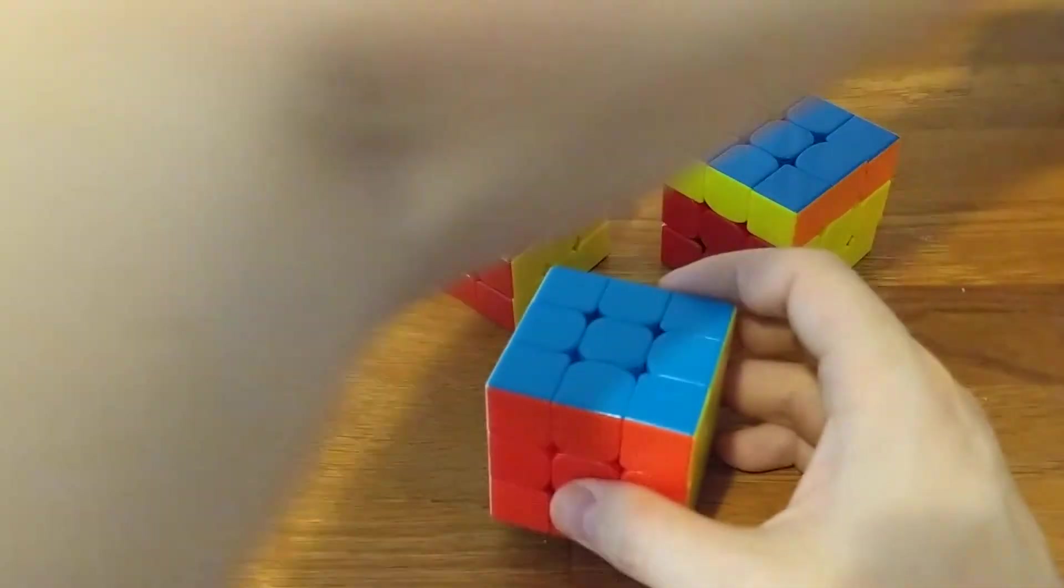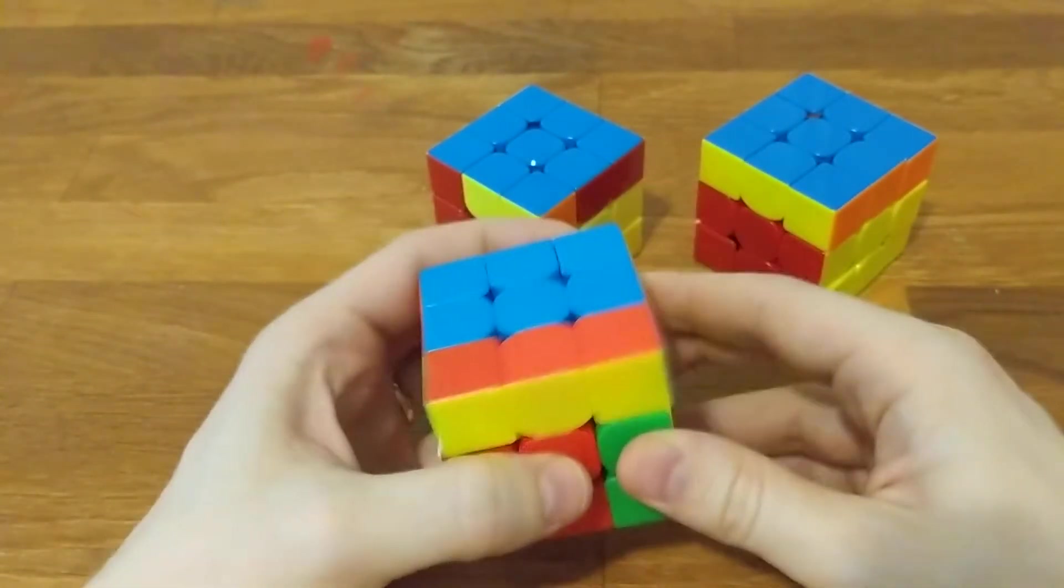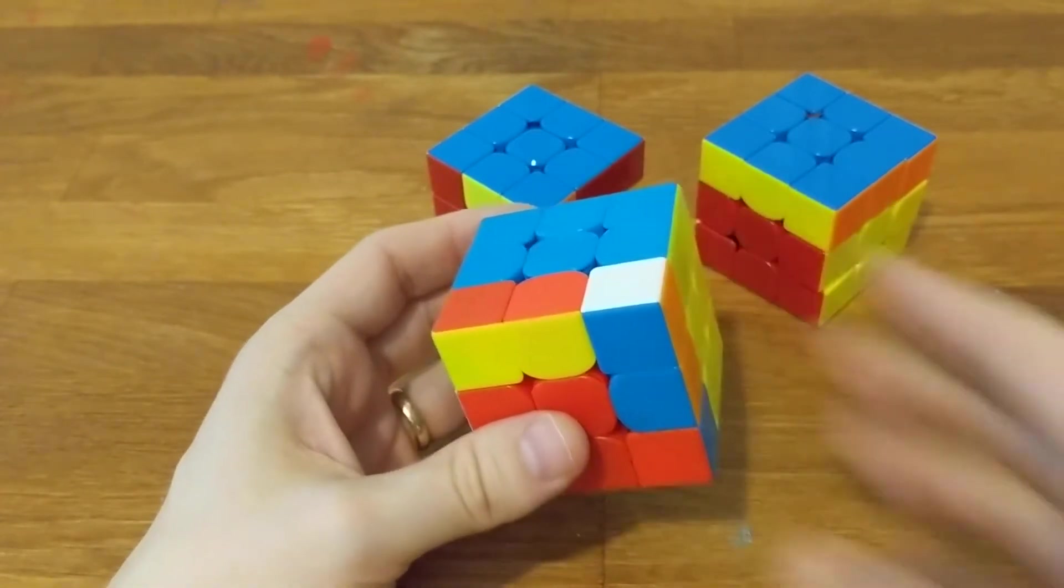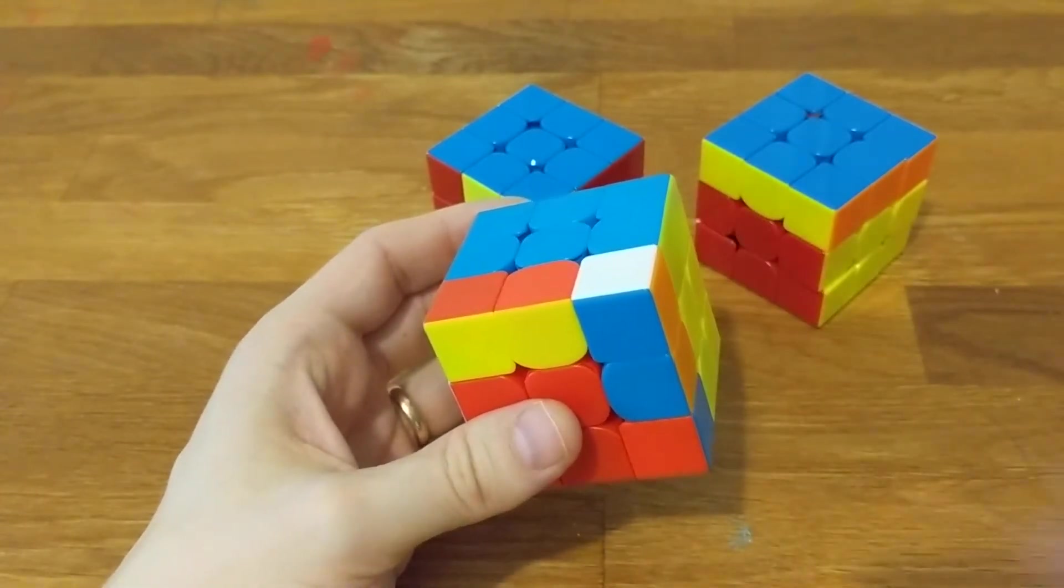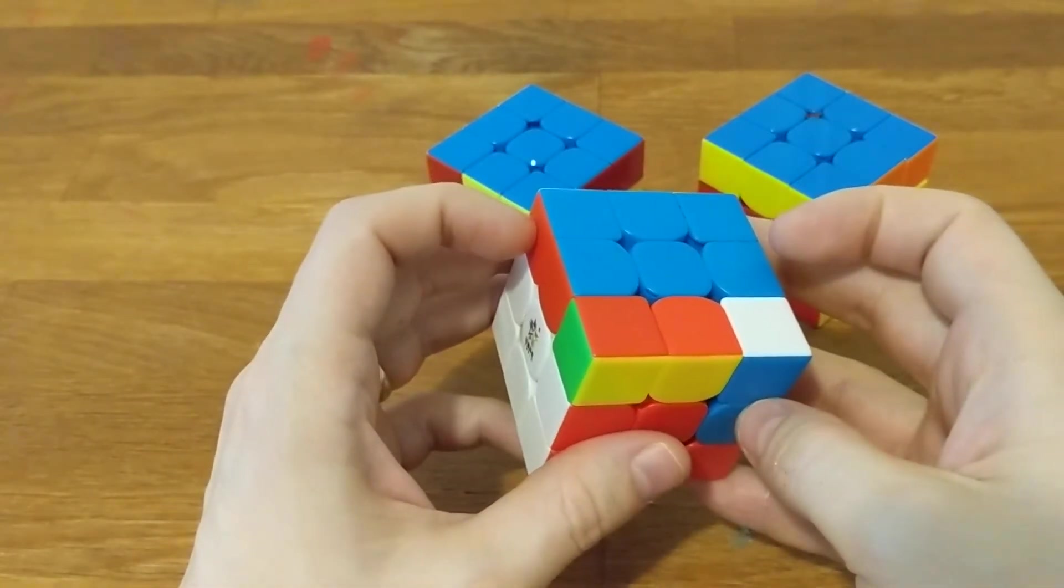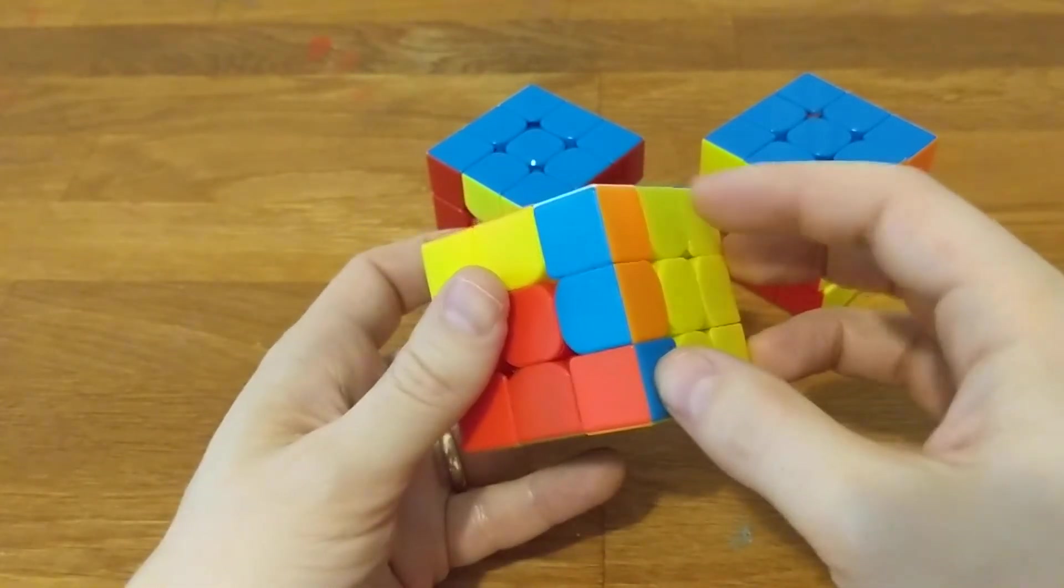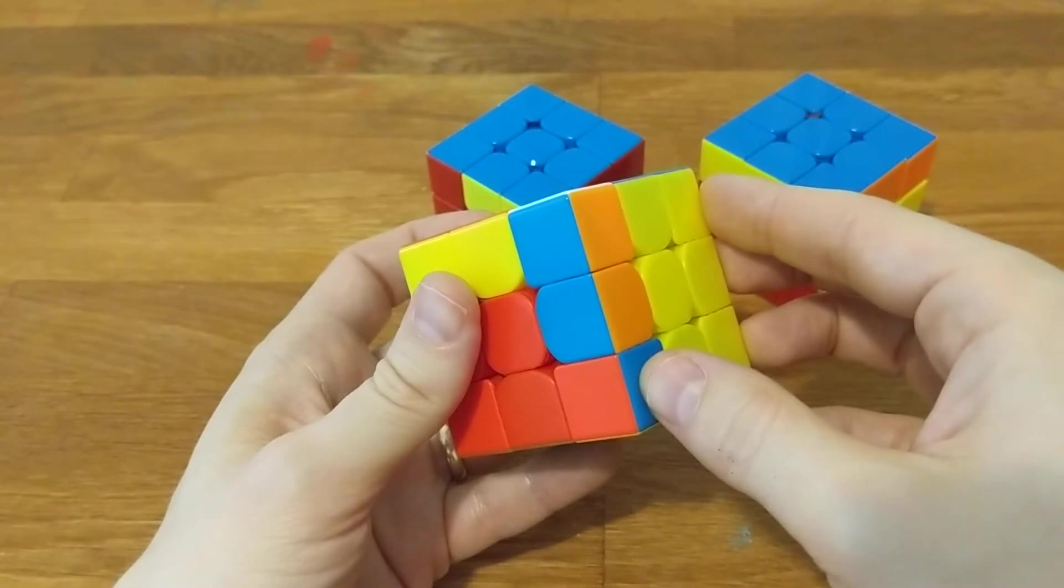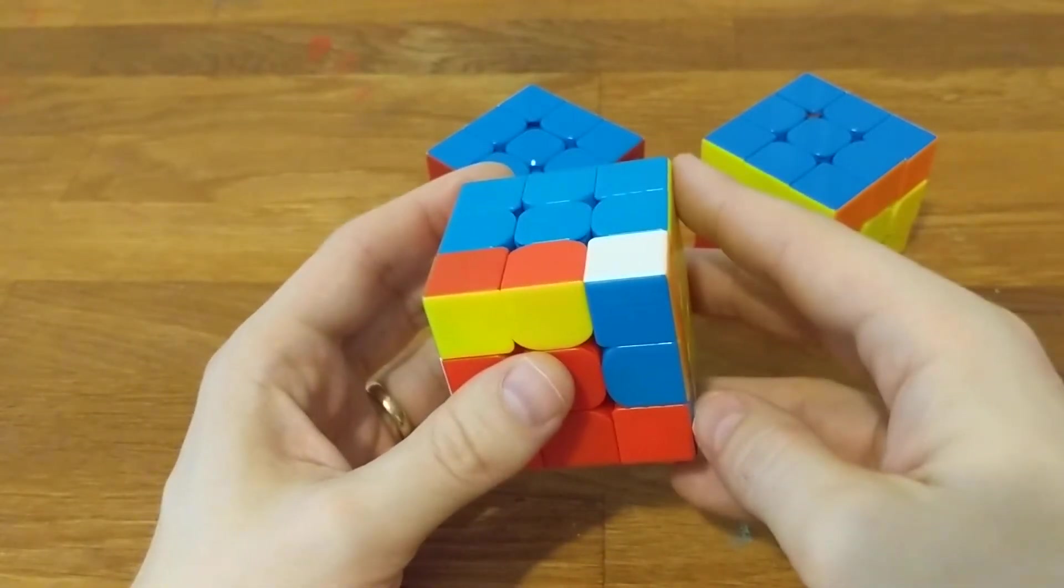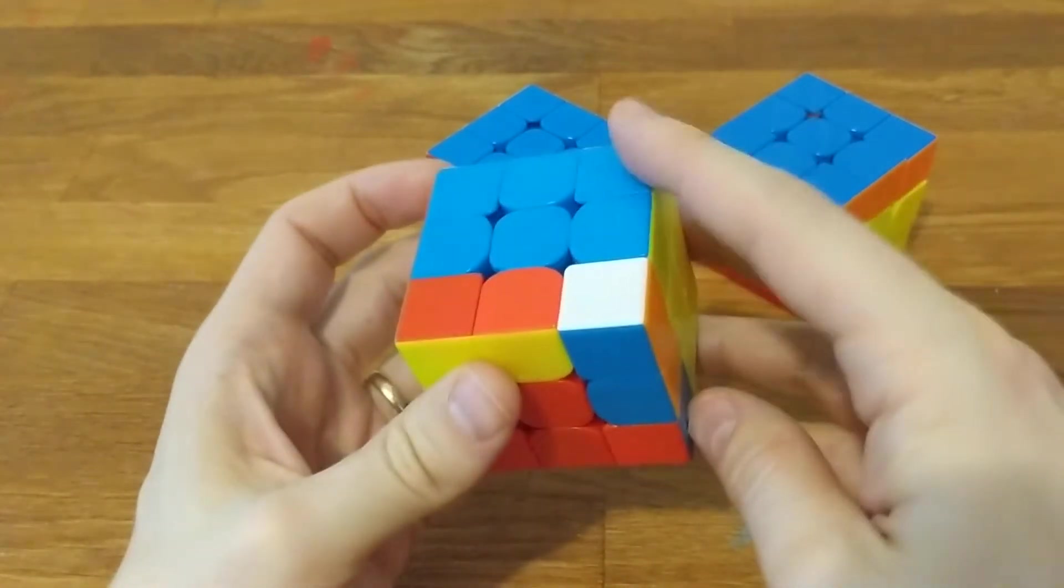So try this short scramble: R U R prime. Since the scramble has an odd number of quarter turns, it has odd parity. Our corner memo is E I P, and we're back to our buffer with everything else solved. Since we have an odd number of letters in our memo, we have odd parity. So we'll add the letter B to make the memo E I P B.